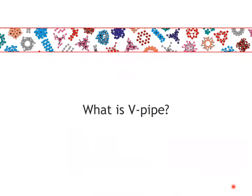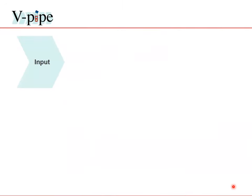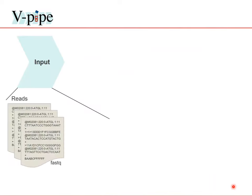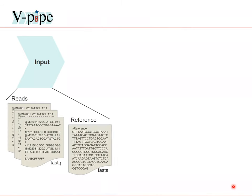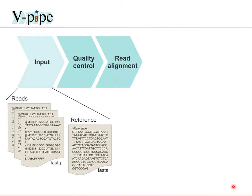So what is vPipe? It's a pipeline starting with input data. The input data comprises the reads from the sequencing experiment in FASTQ format and typically also a reference genome given in FASTA format. The first step in the pipeline is quality control, where various measures are taken to ensure the quality of the read data.